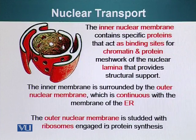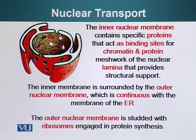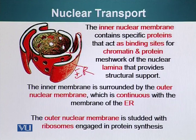The inner nuclear membrane contains specific proteins that act as binding sites for chromatin and for the protein meshwork of the nuclear lamina. The nuclear lamina is a type of intermediate filament that provides structural support to the nuclear envelope. The inner membrane is surrounded by the outer nuclear membrane, which is continuous with the endoplasmic reticulum membrane.